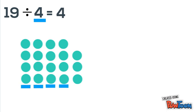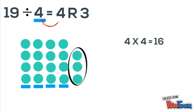So we see that we have four full columns of 4, and 3 extra. So 19 divided by 4 is 4 with a remainder of 3. To check this, we can do 4 times 4, which is 16, and then we do 16 plus 3 gives us 19.